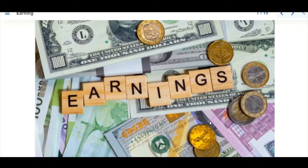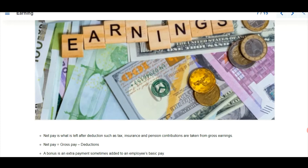We have different types of earnings. Net pay is what you take home — what you earn after discharging goods or a service. Net pay is what is left after deducting tax, insurance, and pension contributions from your gross earnings. So: net pay equals gross pay minus deductions.